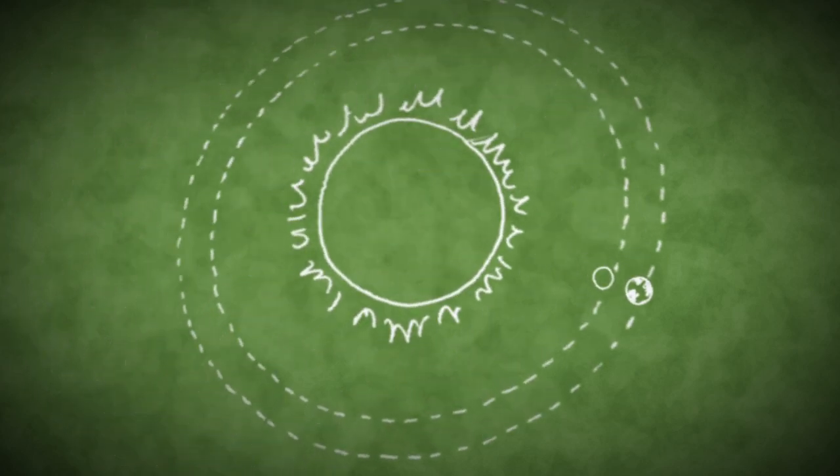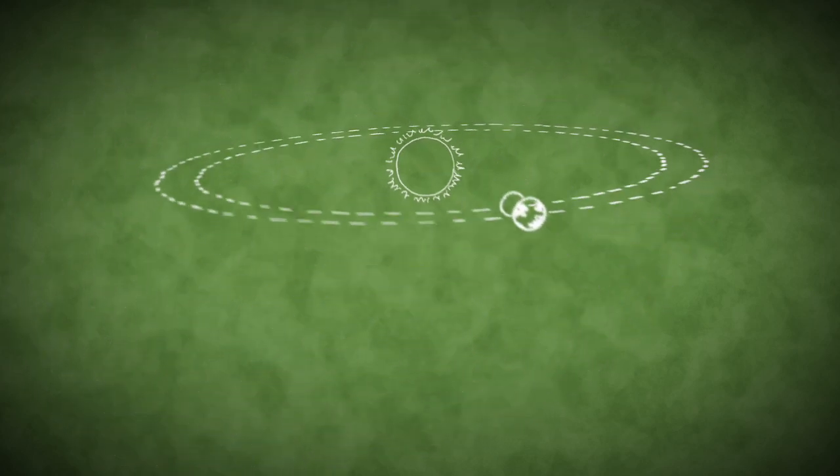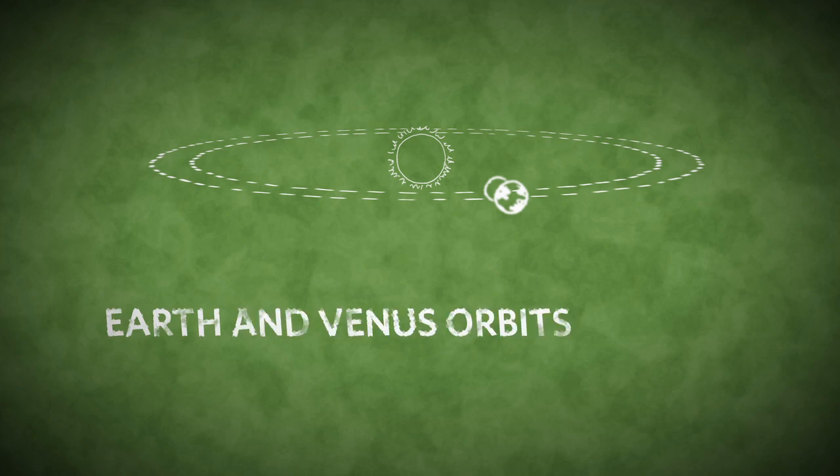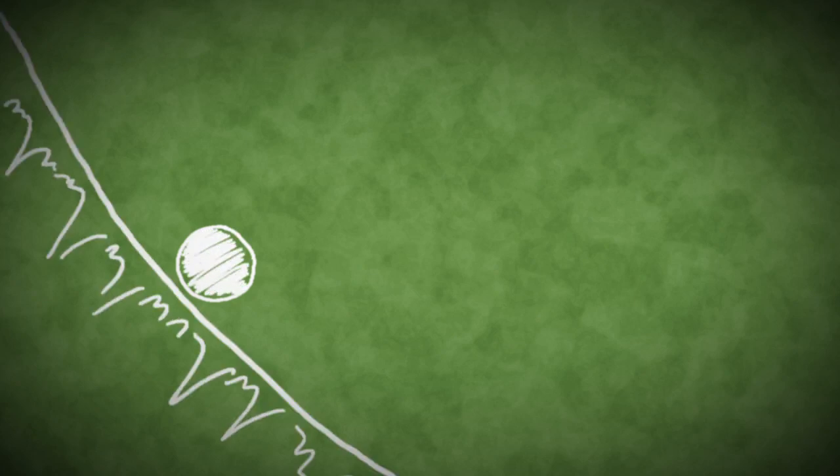Most of the time, it passes above or below the Sun as seen from Earth because the orbits of Earth and Venus aren't precisely on the same plane. At rare times, however, Venus can cross directly in front of the Sun.